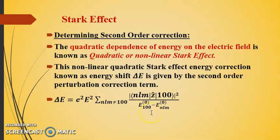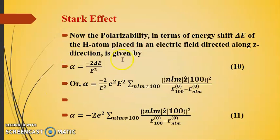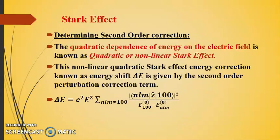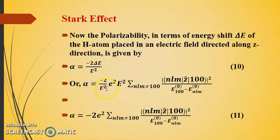The polarizability in terms of energy shift delta E of the hydrogen atom placed in an electric field directed along z direction is given by alpha equals to minus 2 delta E by e squared. Or this alpha equals to minus 2 by e squared and this whole expression is for delta E as it is in the previous slide. This e squared cancels out with this e squared and we are left with this expression for polarizability.